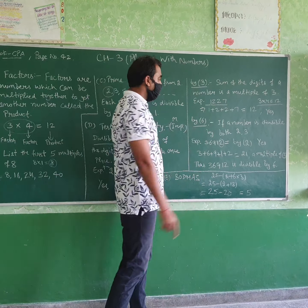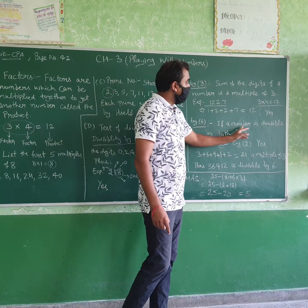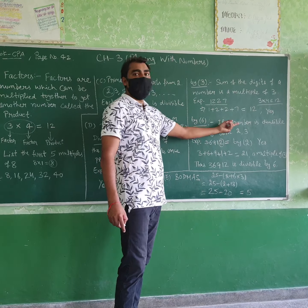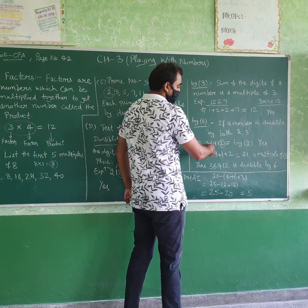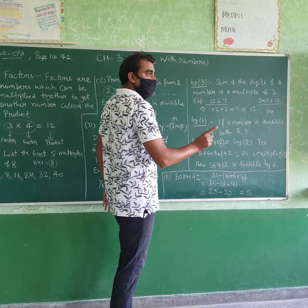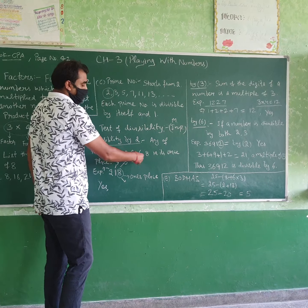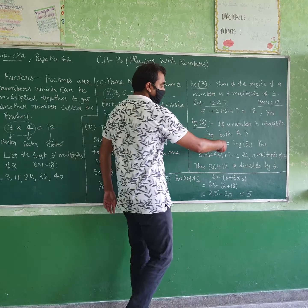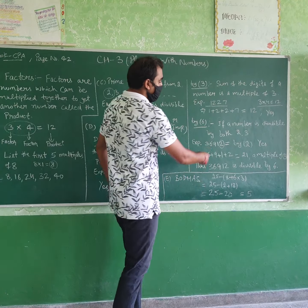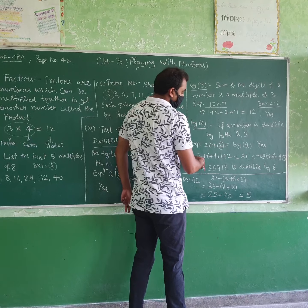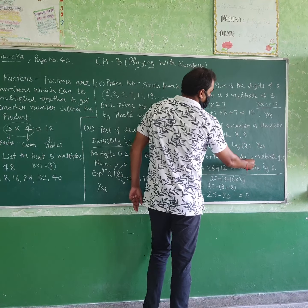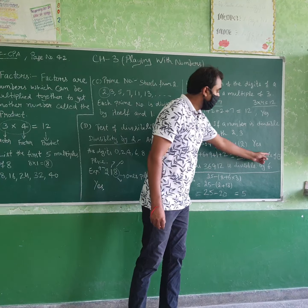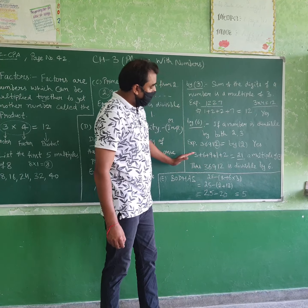Now divisibility by 6. If a number is divisible by both 2 and 3, then it is also divisible by 6. For example, take 3692. First check for 2: the ones place is 2, so it is divisible by 2. Now check for 3: the sum of digits 3 plus 6 plus 9 plus 2 equals 20 — wait, it becomes 21, which is a multiple of 3. So this number is divisible by both 2 and 3, meaning it is also divisible by 6.